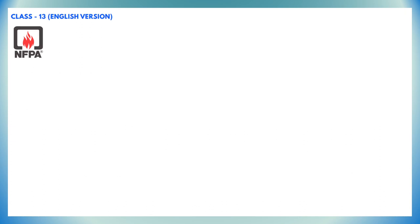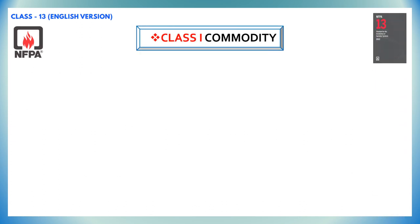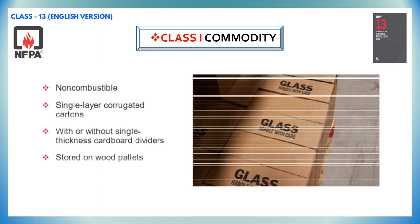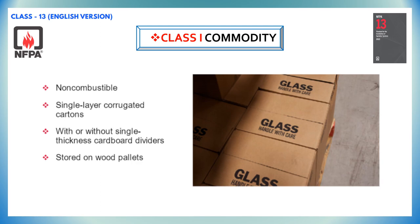Class 1 type commodity is defined as a non-combustible product that meets one of the following criteria. Class 1 commodity is placed directly on wood pallets, placed in single layer corrugated cardboard boxes with or without single thickness cardboard dividers, and shrink wrap or paper wrap as a unit load.